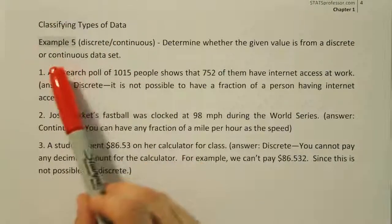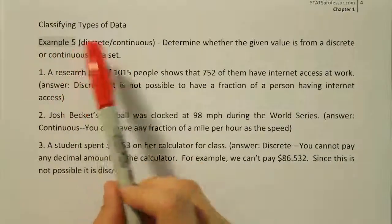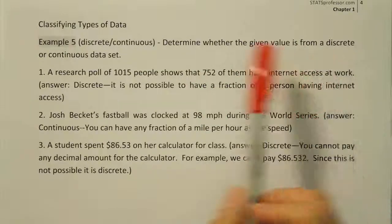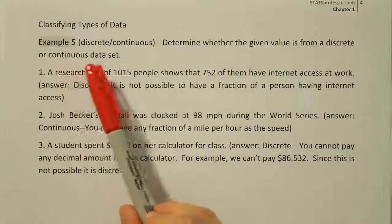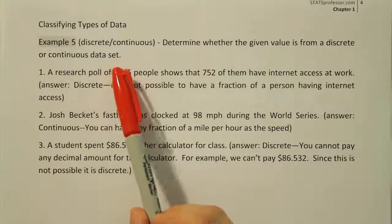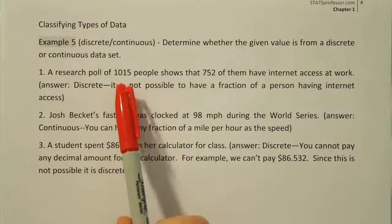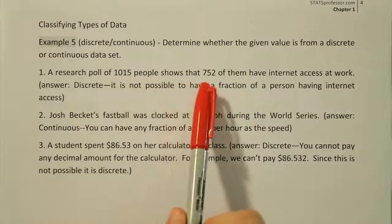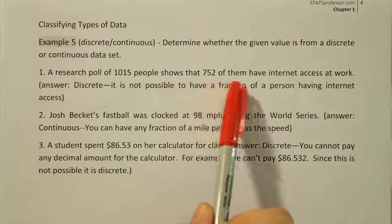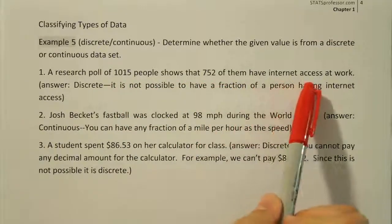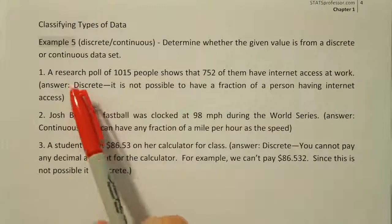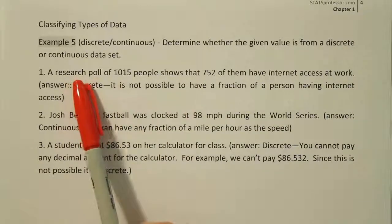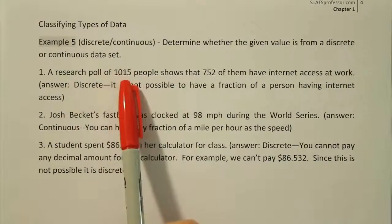Classifying types of data, Example 5. Determine whether the given value is from a discrete or continuous data set. A research poll of 1,015 people shows that 752 of them have internet access at work. The question here is whether the data is discrete or continuous.